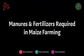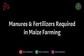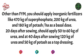Manures and Fertilizers Required in Maize Farming: Other than farmyard manure, you should apply inorganic fertilizers like 470 kg of superphosphate, 200 kg of urea, and 180 kg of potash per hectare as a basal dose. 20 days after sowing, apply 50–60 kg of urea, and at 40 days after sowing apply 120 kg of urea and 50 kg of potash as a top dressing.